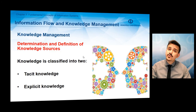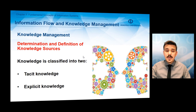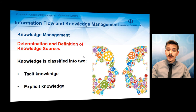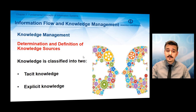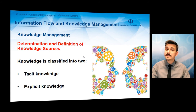Knowledge is classified into two categories: tacit knowledge and explicit knowledge. Tacit knowledge exists only in human minds and perceptions. Its definition is difficult and it generally concerns human experience, intuitions, and understanding. On the other hand, explicit knowledge is expressed with words, signs, symbols, and numbers. It is recorded in books, documentations, and databases, and its acquisition is relatively easier than tacit knowledge.